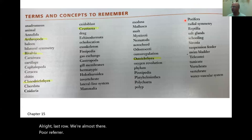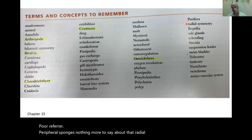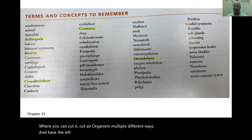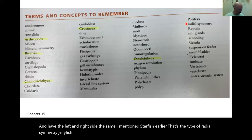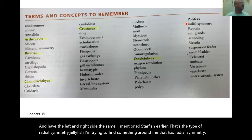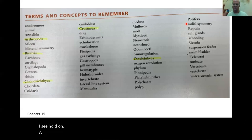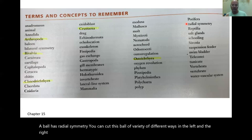Porifera — sponges. Radial symmetry is a type of symmetry where you can cut an organism multiple different ways and have the left and right side the same. Starfish and jellyfish are examples. A ball has radial symmetry — you can cut it a variety of ways and the left and right side will be the same.